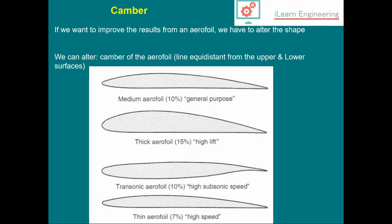I've got some examples here on screen. We can see a general purpose airfoil on top, a thick airfoil for higher lift but higher drag as well, a transonic airfoil for operating in the transonic flow regime around Mach 0.8, and a very thin airfoil for high speed. As you increase speed, they tend to become thinner.